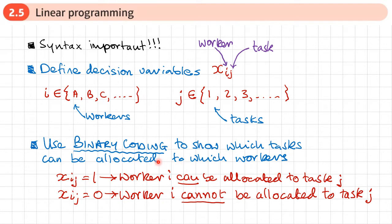Next we use binary coding to show which tasks can be allocated to which workers, because in some cases certain workers cannot do certain tasks. If X sub I J equals 1, it means worker I can be allocated to task J. If X sub I J equals 0, worker I cannot be allocated to task J.